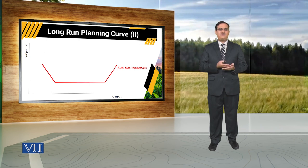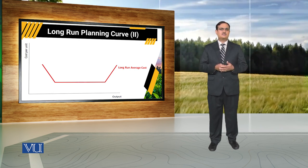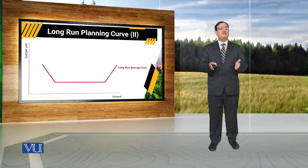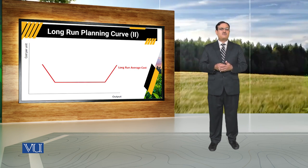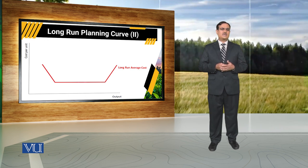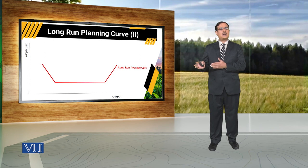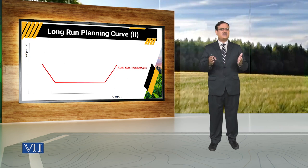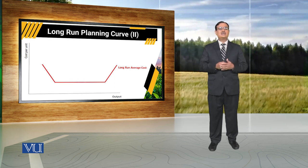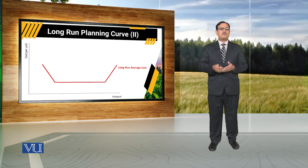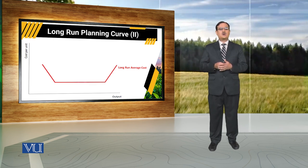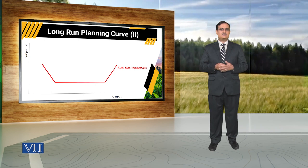लेकिन यह जो flat सा part है long run average cost curve का, यह report कर रहा है constant returns to scale — after reaching the minimum average cost, farmer is operating under constant returns to scale, कि by doubling input, output also becomes double. Agricultural cases में यह portion is a relatively large portion. और अगर there is further expansion in output, long run average cost start increasing — that is because of decreasing returns to scale.